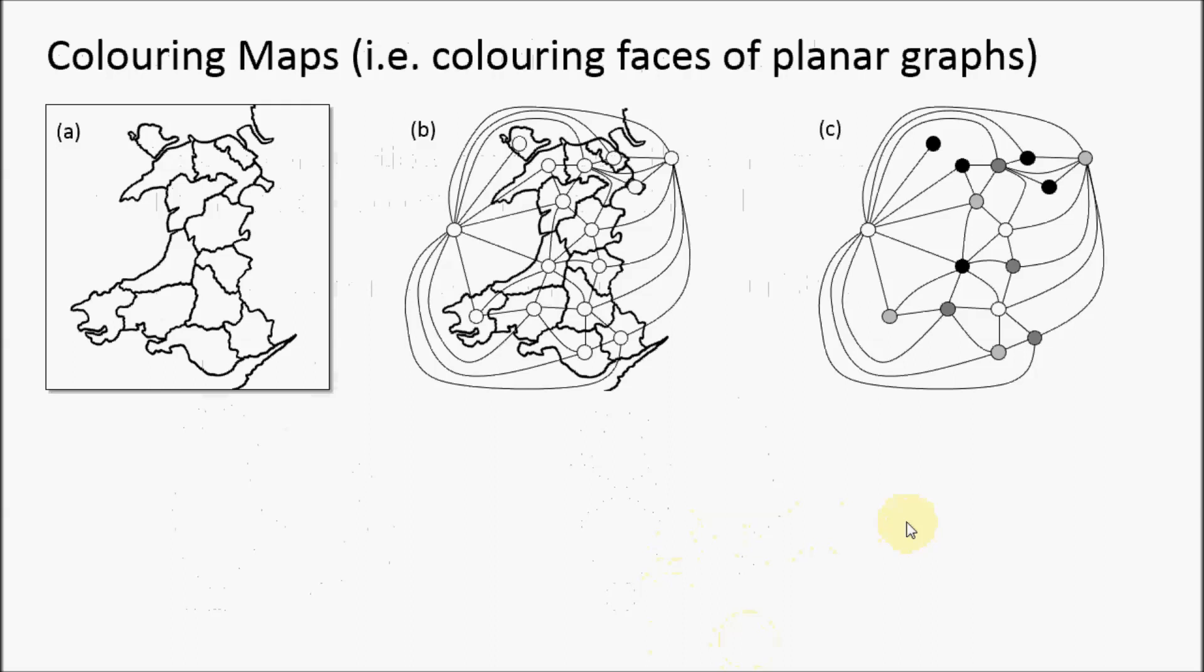One of the original problems for graph coloring, where it first originated, was with the coloring of maps. This was first pointed out in the 1800s, that a map could be colored using only four colors so that neighboring regions always had different colors.